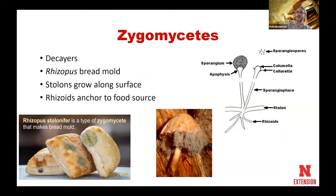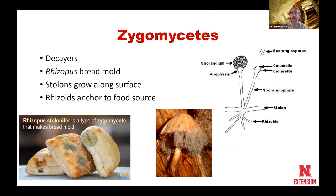The next group are our zygomycetes — it's a really fun word to say. These are a lot of our decayers. If you've ever had a loaf of bread that sat a little longer than it should have, and you opened it and it was all green and blue and black, that was infected with a zygomycete. Most zygomycetes tend to be our decayers, so in nature they're actually very beneficial. We don't have many zygomycete pathogens, at least pathogens of plants or animals.